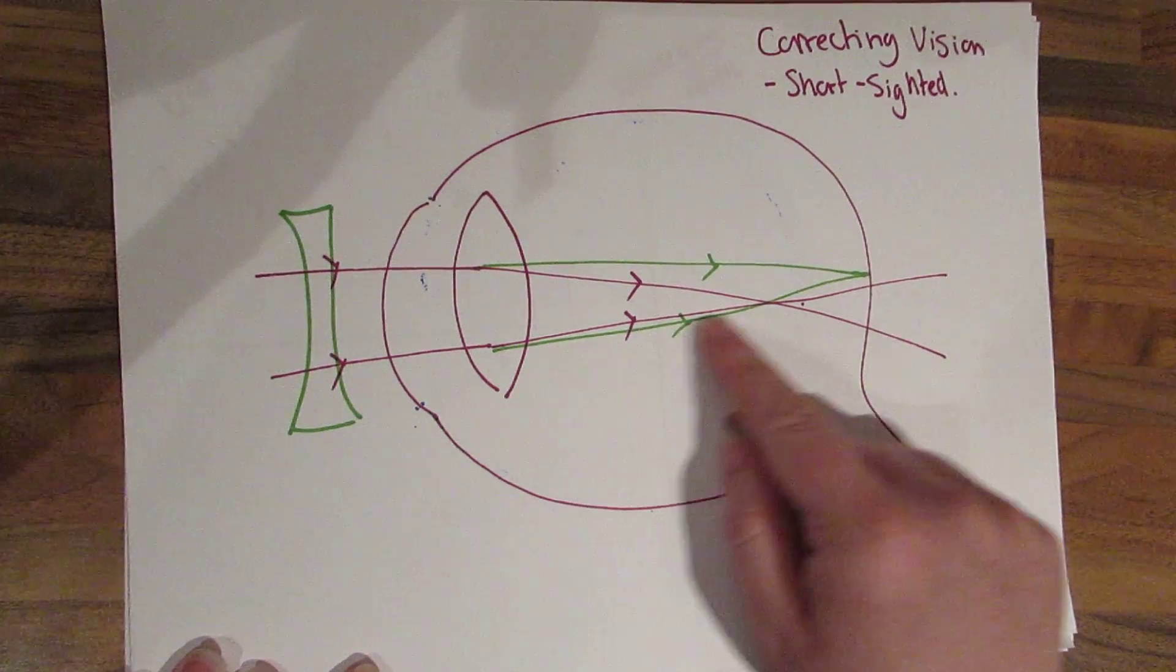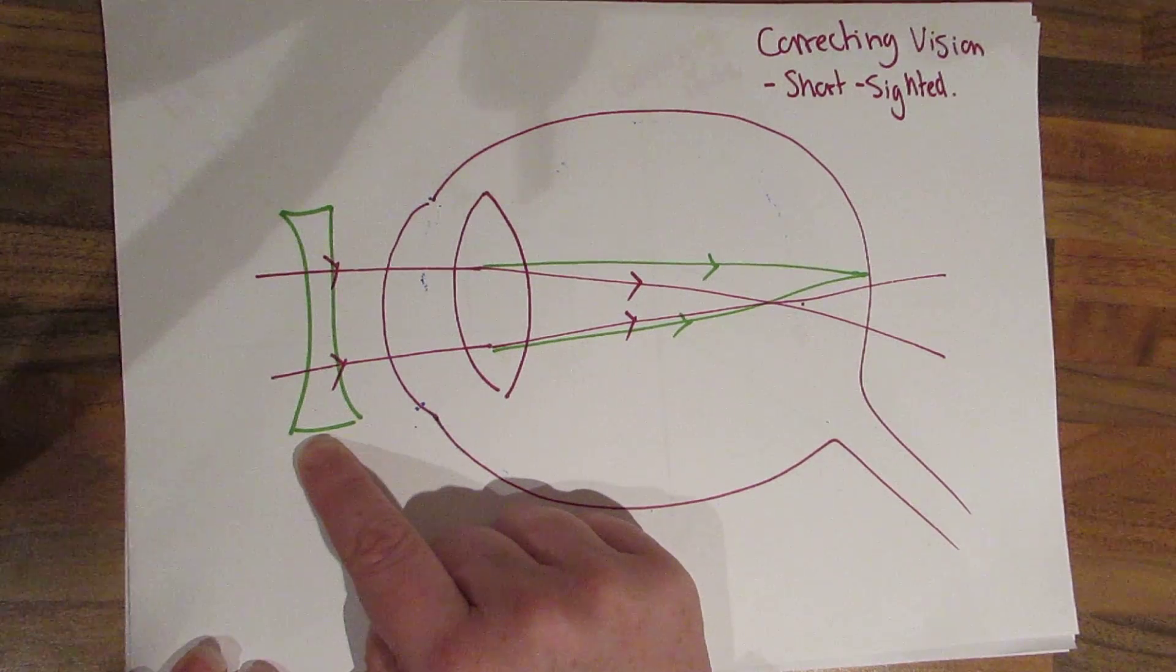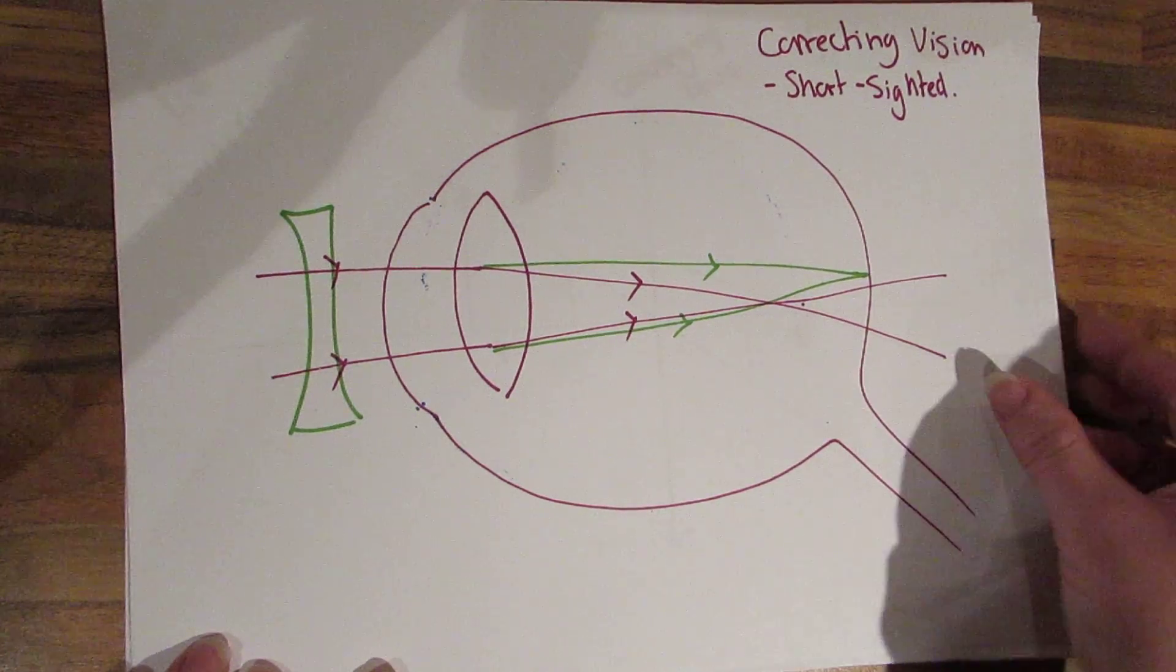Alternatively in short-sightedness the image forms in front of the retina so you need to put a diverging lens in front of it so the image actually forms on the retina.